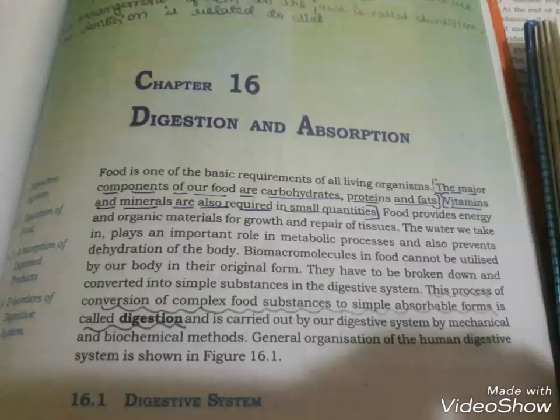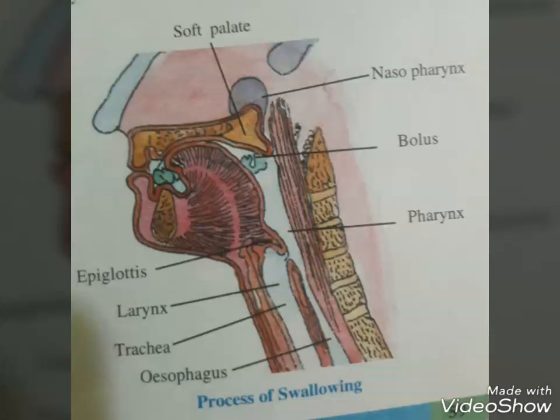Biomacromolecules in food cannot be utilized by the body in their original form. They have to be broken down and converted into simple substances in the digestive system. This process of conversion of complex food substances to simple absorbable form is called digestion, and is carried out by the digestive system by mechanical and biochemical methods.